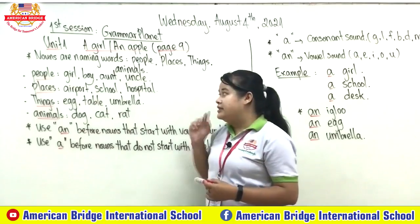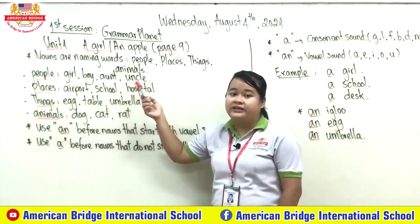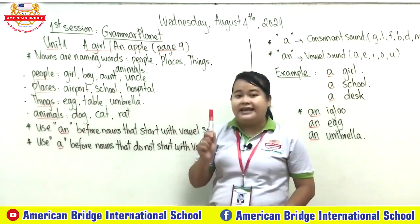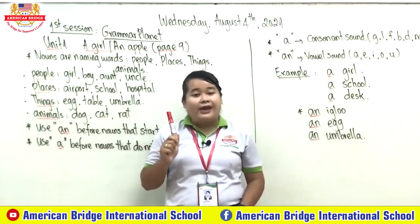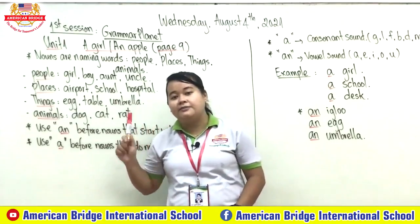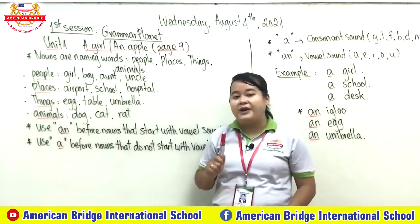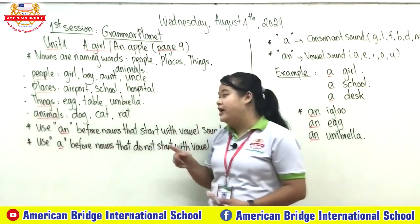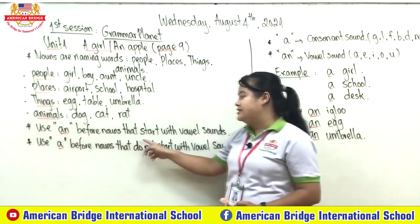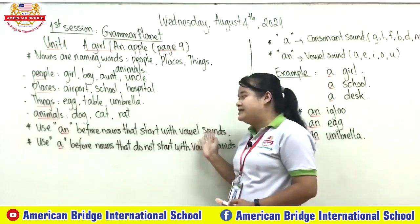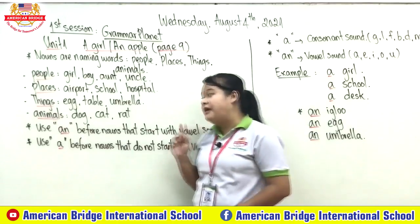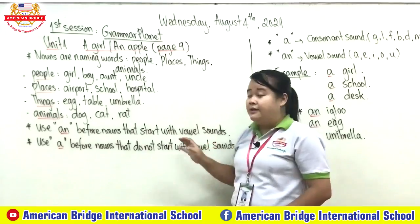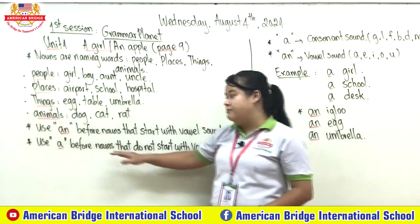So a noun is a naming word related to people, place, thing, or animal. One more thing to remember: when you use nouns, you need to know how to use 'a' or 'an'. We use 'an' before nouns that start with a vowel sound — I will explain what vowel sound means later. We use 'a' before nouns that do not start with a vowel sound.